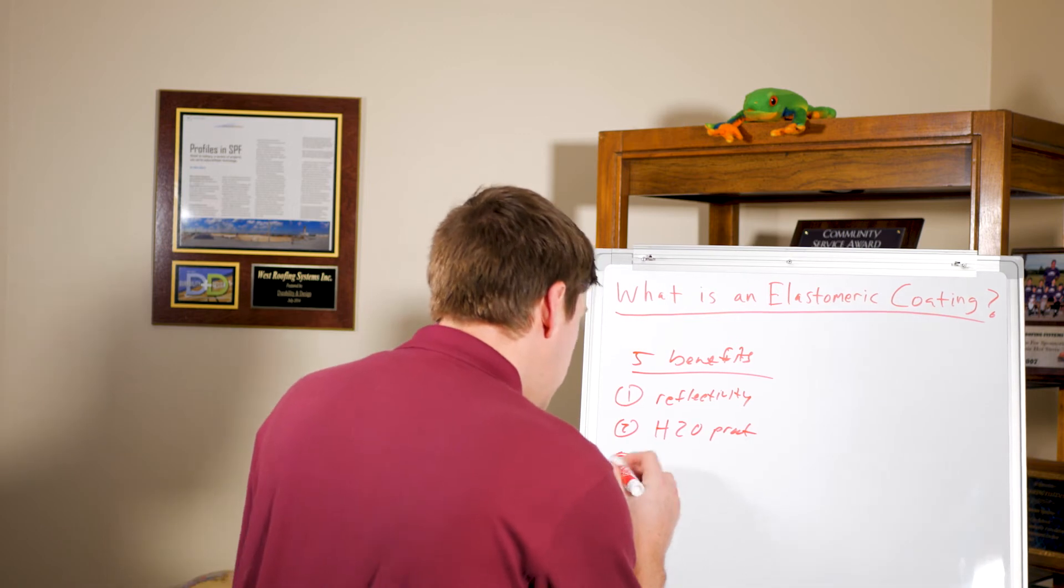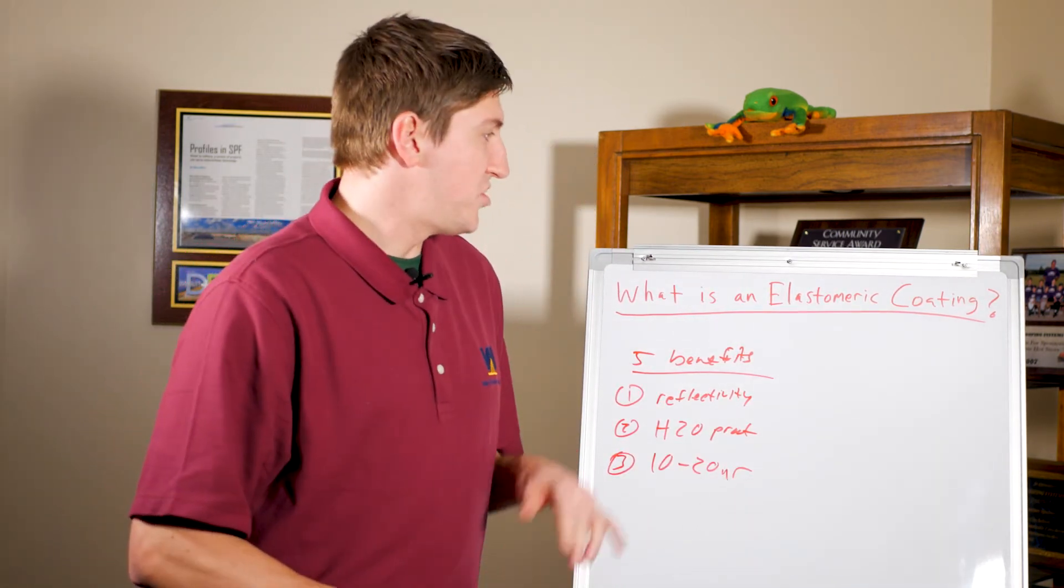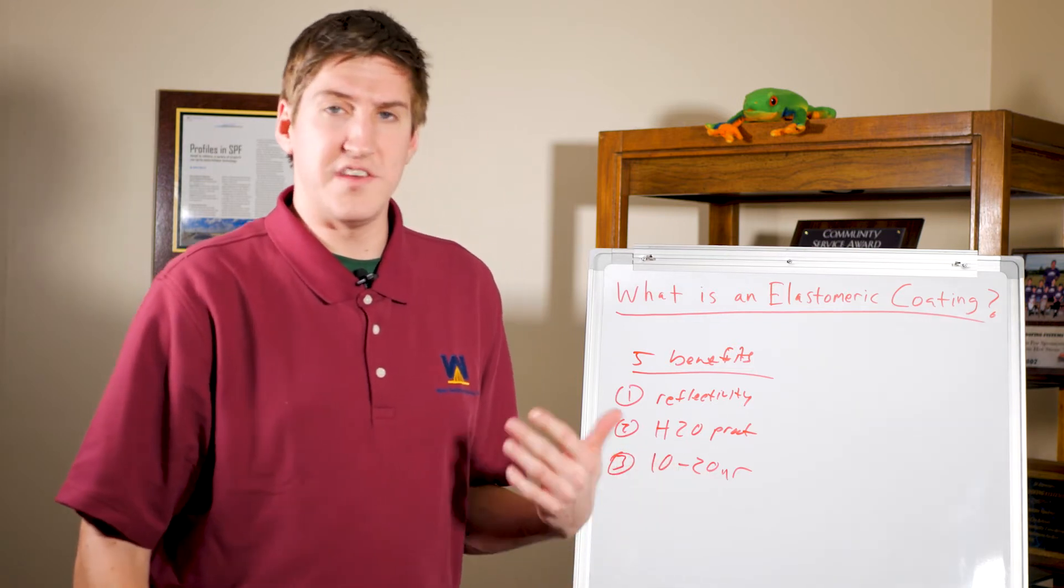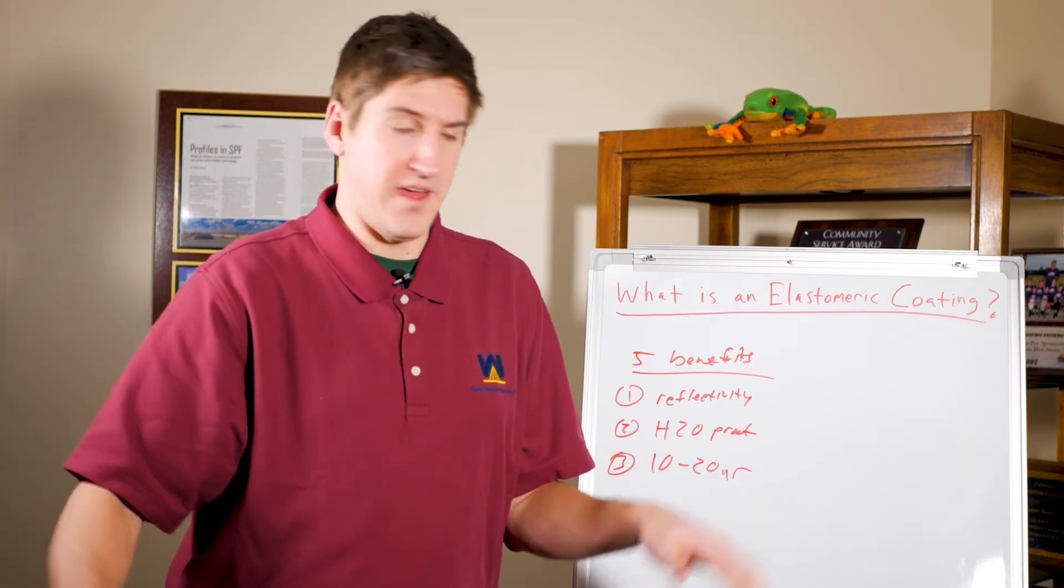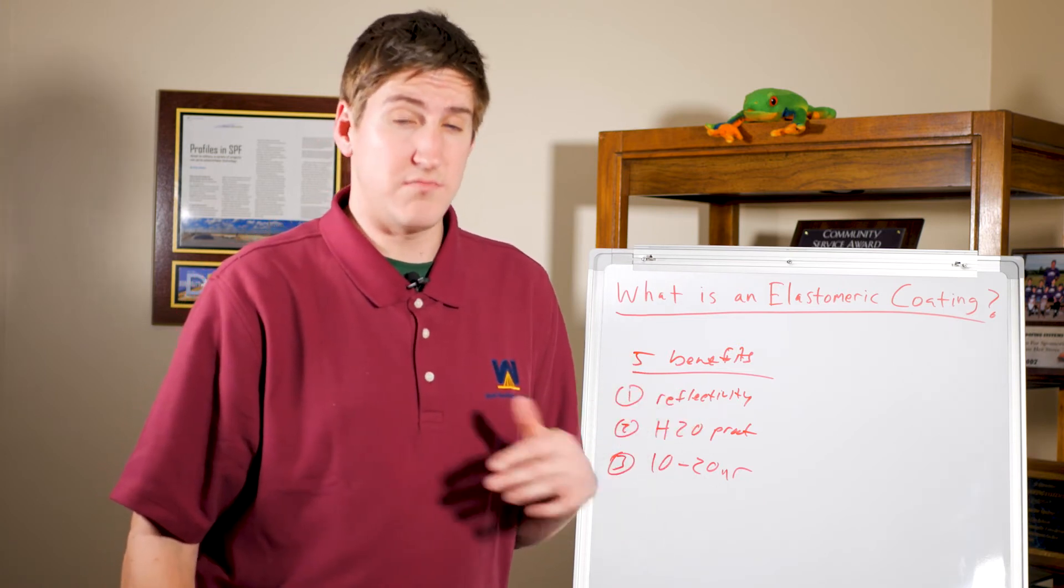The next thing is you get a 10 or 20 year warranty on that. So most people don't install these on a rubber roof. Once their 10-year warranty expires, they'll coat the whole thing, and when you do this you can get a new 10 or 20 year warranty and keep the roof going.